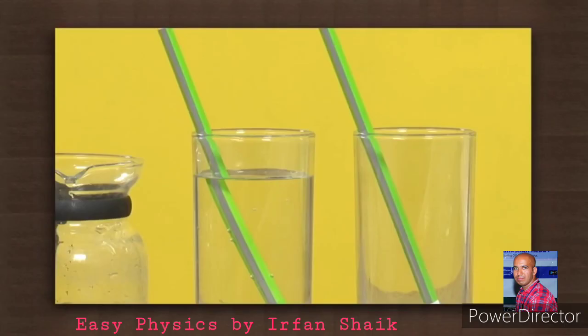Here, the pencil looks like bending because the speed of light in air and water is different. That's why it bends.